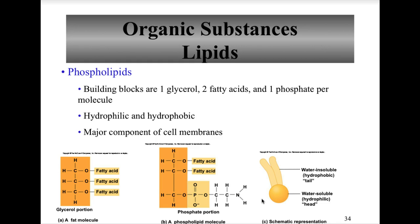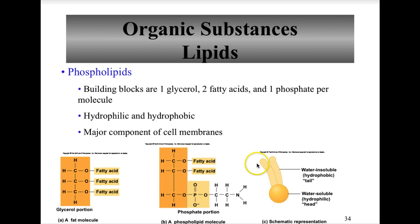A phospholipid is a triglyceride with a polar phosphate group (PO4−) substituted for one fatty acid chain. The phosphate head is hydrophilic (water-loving) and these are major components of our cell membranes. The fatty acid chain portion is the hydrophobic tail.